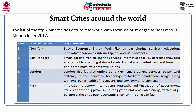The second smart city is San Francisco, with strengths including smart parking, vehicle sharing services, internet speed, 41 percent renewable energy, public charging stations for electric vehicles, and routing tools for pedestrians and bikers to find the most efficient travel routes. The third is London, which features underground Wi-Fi, smart parking services, the Oyster card system, and innovative technology to facilitate smartphone use along with improving the health of citizens and environmental services.